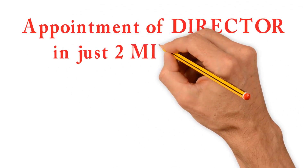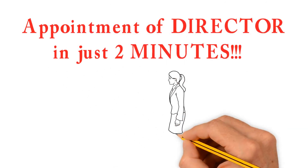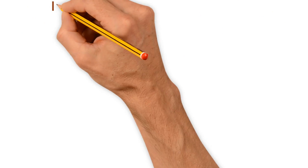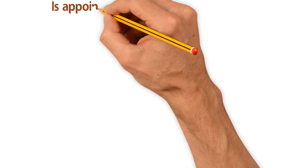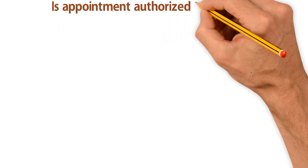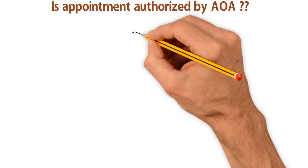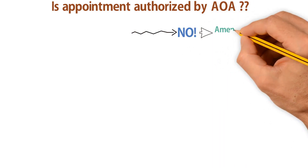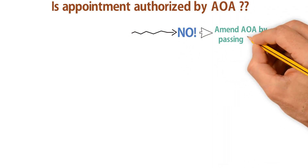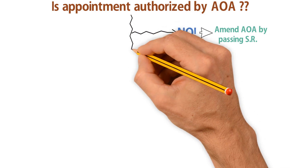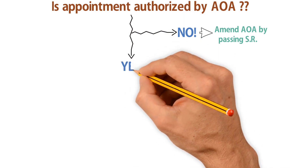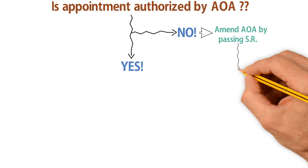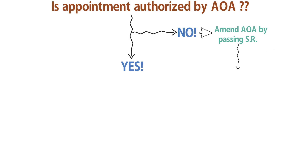For appointment of a director, first check whether the appointment is authorized by the Articles of Association. If not, pass a special resolution to amend the Articles. After the board of directors are empowered by the Articles, the following steps need to be undertaken.